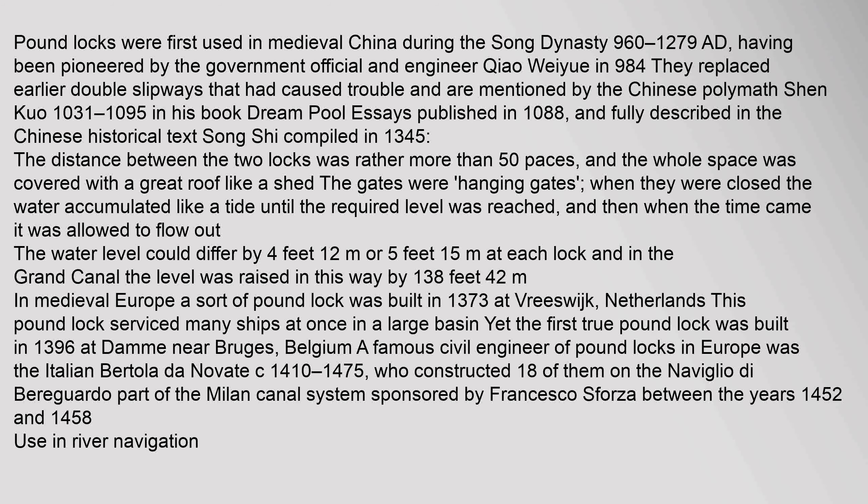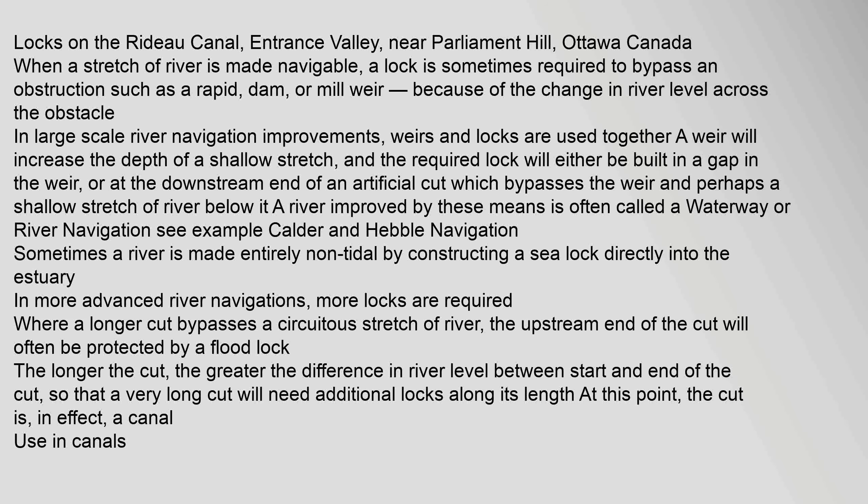When a stretch of river is made navigable, a lock is sometimes required to bypass an obstruction such as a rapid, dam or mill weir, because of the change in river level across the obstacle. In large-scale river navigation improvements, weirs and locks are used together. A weir will increase the depth of a shallow stretch and the required lock will either be built in a gap in the weir or at the downstream end of an artificial cut which bypasses the weir. A river improved by these means is often called a waterway or river navigation. Sometimes a river is made entirely non-tidal by constructing a sea lock directly into the estuary.